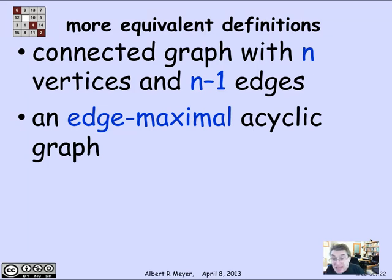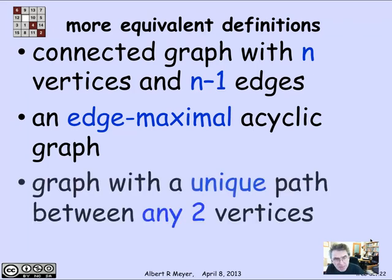So an edge maximal acyclic graph is still another way to characterize trees. And maybe the most useful way is to say that a graph in which there is a unique path between any two vertices is a tree.